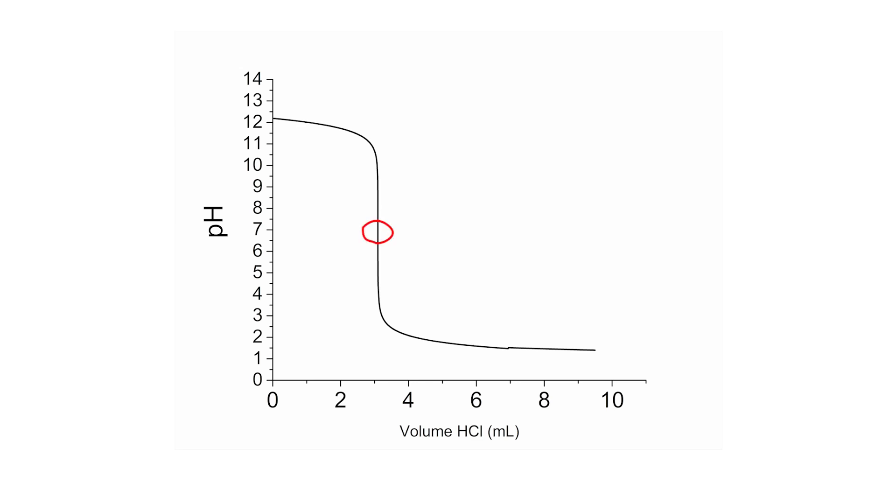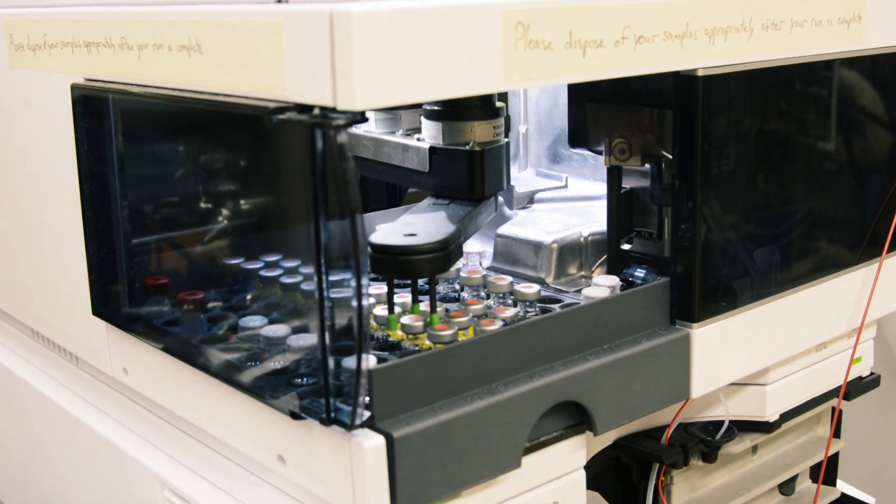For a strong acid and a strong base, the endpoint of the titration occurs at pH 7, and we can find the titrant volume very precisely from the graph.